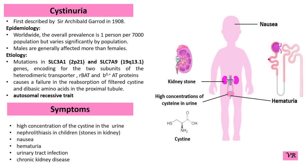Cystinuria is inherited in an autosomal recessive manner, meaning that two copies of the mutated gene are required for the disorder to manifest. This is all about Cystinuria.